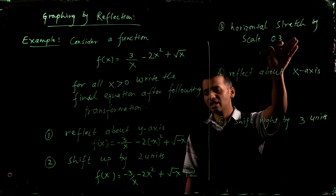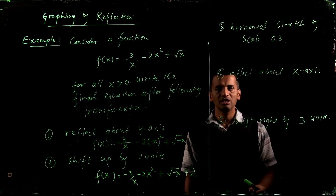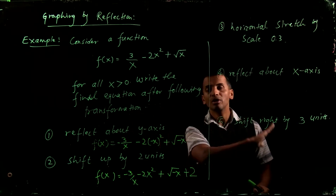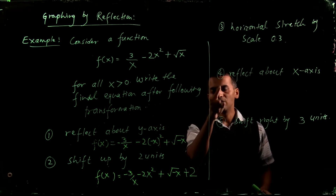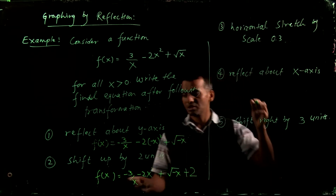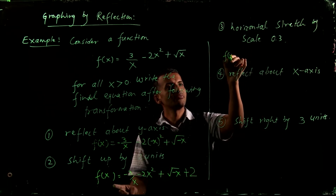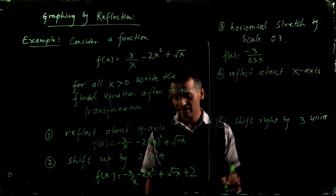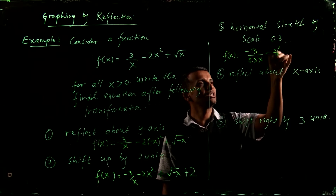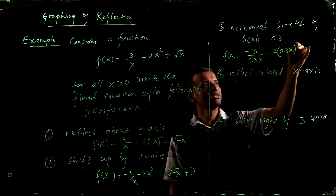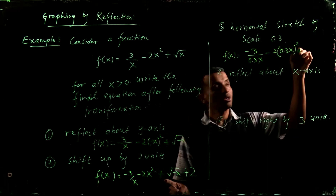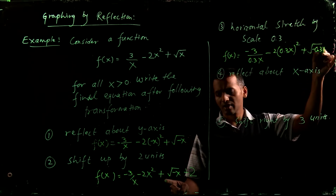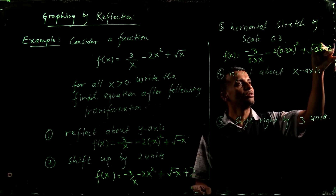Next is a horizontal stretch by scale factor 0.3. For horizontal transformations you always work with x — you multiply x by that number. So f(x) becomes negative 3 over 0.3x, minus 2 times (0.3x) squared, plus square root of negative 0.3x, and then plus 2.